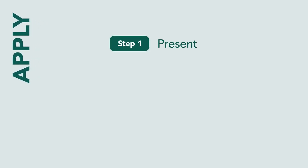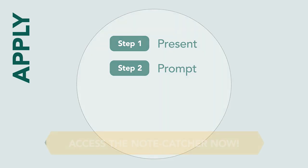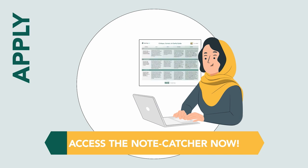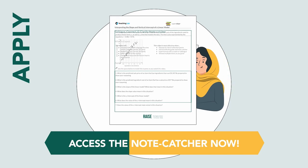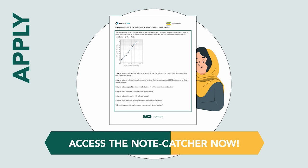The teacher will model the first step, present, by presenting a partial or broken argument, explanation, or solution method. Then the teacher will model the second step, the prompt — the teacher will prompt students to identify inaccuracies. To make the most of this model, access the video's note catcher now and write your thoughts as if you were a student.